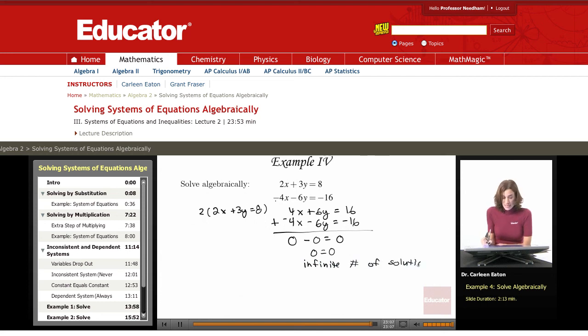If I were to graph this, I would see that I have an infinite number of solutions, that these are intersecting at every point along a line. So we call this a dependent system.